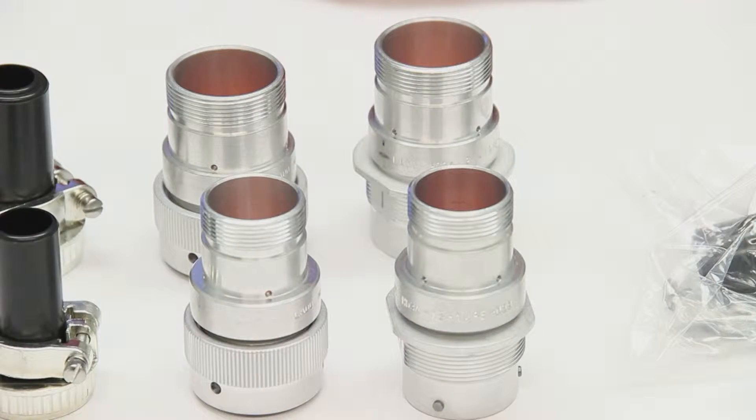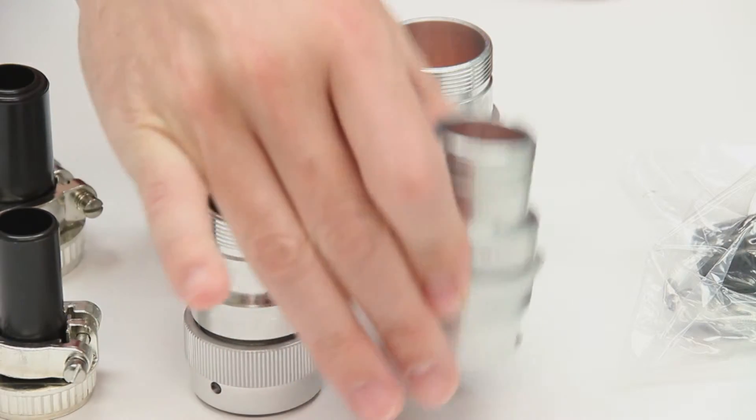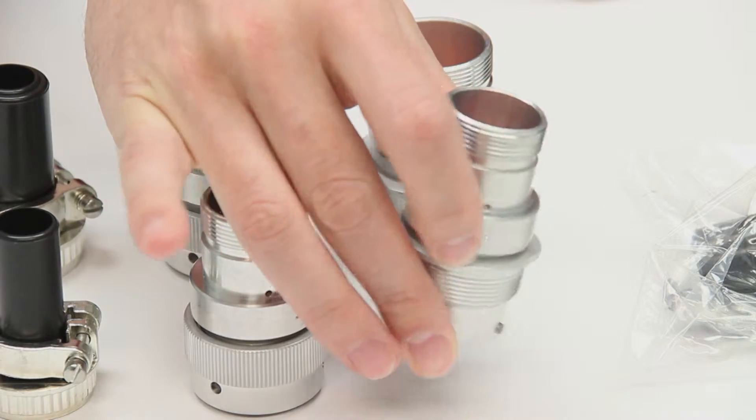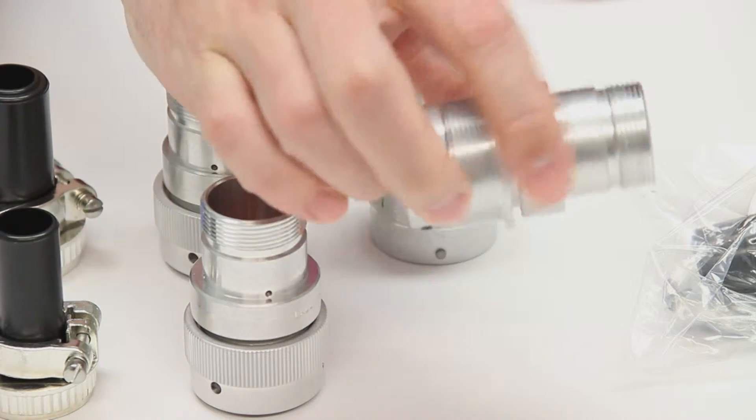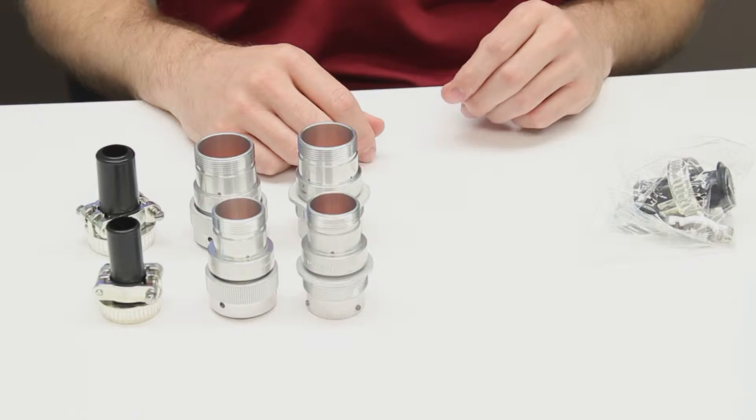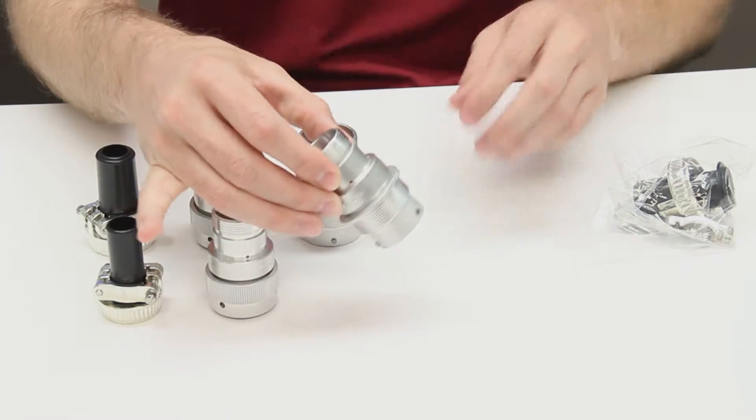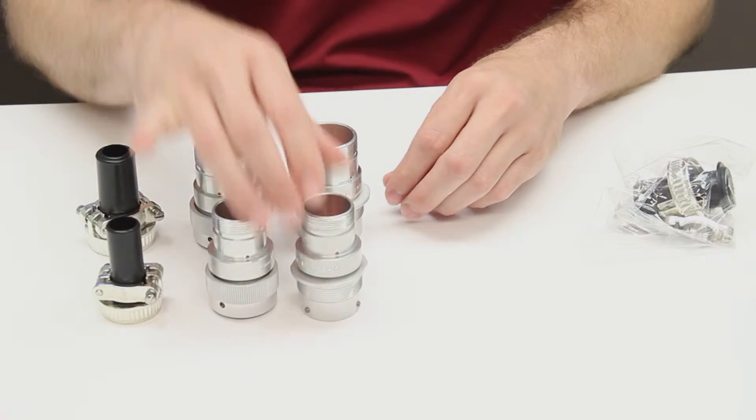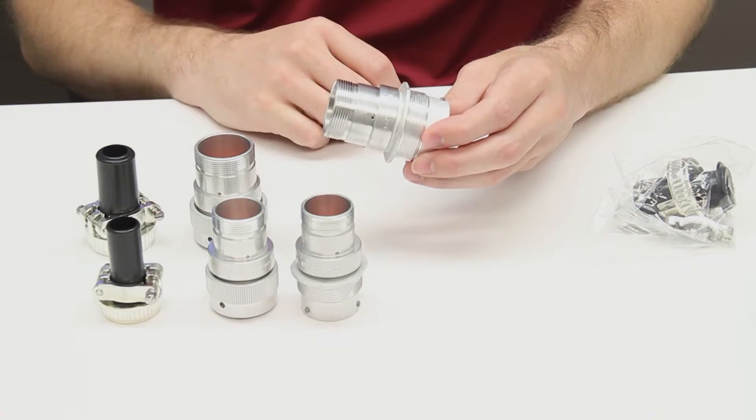When you order an HD30 connector with the 059 modification, you'll receive a connector that is fitted with an adapter and comes with a small bag that contains a cable clamp assembly. The 059 modification is available on both size 18 and 24 shell HD30 connectors.